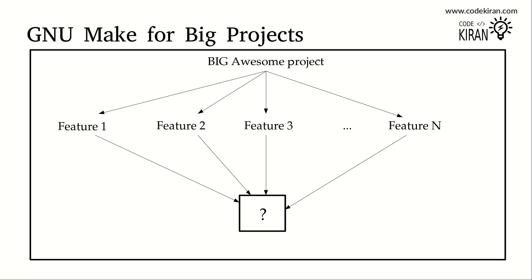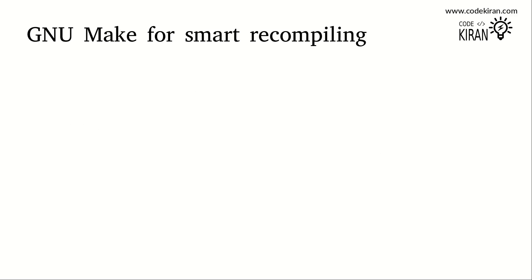Here you can make use of GNU make. GNU make will combine all the object files, making your work much easier, and generate a library file or an executable file at the end. GNU make also does smart recompilation — let's find out how it works.